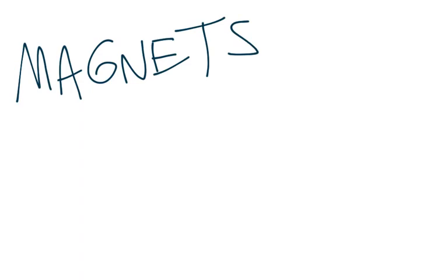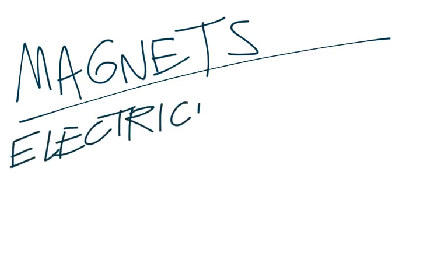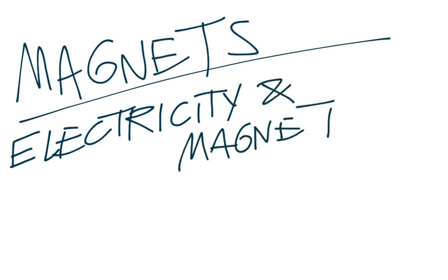This video is going to be all about magnetism — we're going to learn about magnets and why they work and what their connection is to electricity. Magnets are usually lumped in with electricity; they call it electricity and magnetism. In college, a whole class is dedicated to what's called E&M — electricity and magnetism.